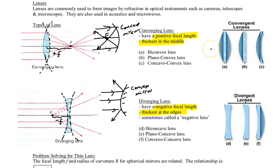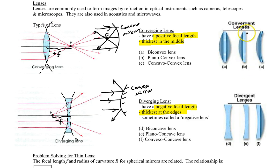There are a lot of names, and it just depends on what the radius is on the surfaces. For example, this is called a plano-convex lens because it's flat on one side and convex on the other. You don't need to know all the names, but you do need to know how to distinguish which ones are converging and which ones are diverging.